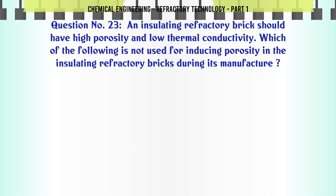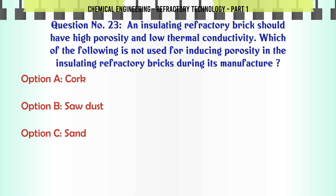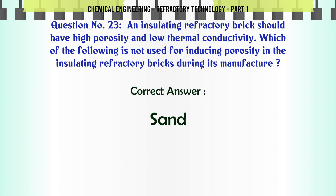An insulating refractory brick should have high porosity and low thermal conductivity. Which of the following is not used for inducing porosity in insulating refractory bricks during manufacture? A. Cork, B. Sawdust, C. Sand, D. Chemically prepared foam. The correct answer is Sand.